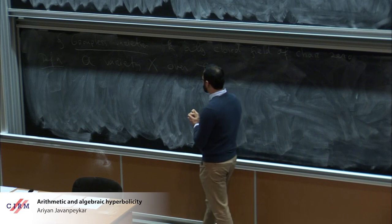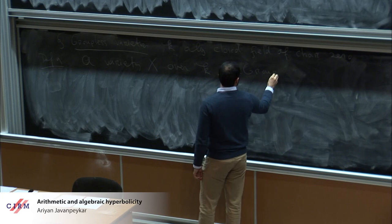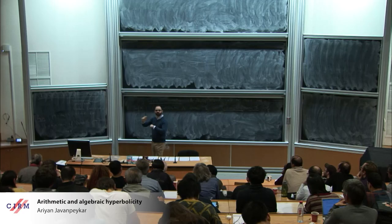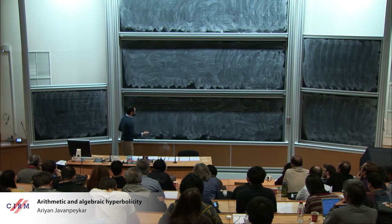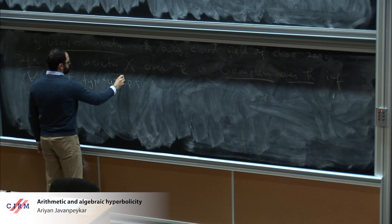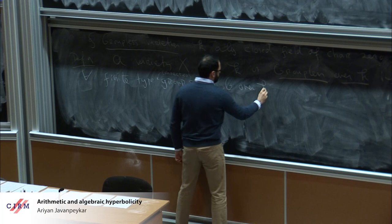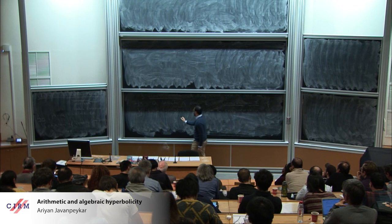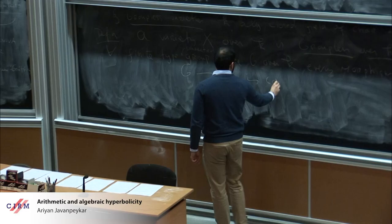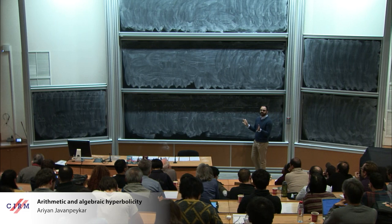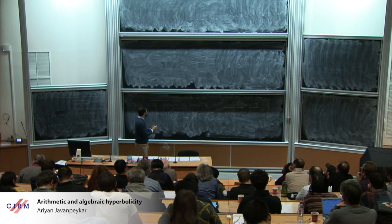For me, this means Q-bar or the complex numbers — that's basically all that matters today. A variety x over k is groupless over k if every morphism in the category of varieties over k from an algebraic group to x is constant. Equivalently, every morphism from a connected finite group scheme to x is constant.